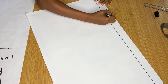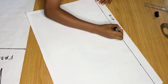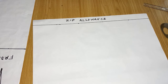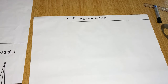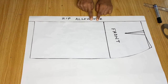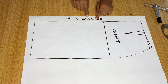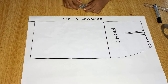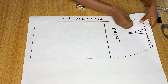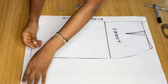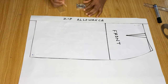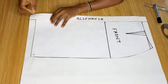This area right here is the zipper allowance. After marking it out, you place the front part of your pattern right on it, aligned to the line before the zipper allowance. You can hold it down with pins, sellotape, a book — whatever works at home — just make sure it doesn't move from where you want it to be.